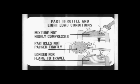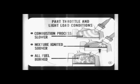Now it's a fact that under part throttle and light load conditions, the air-fuel mixture isn't as highly compressed. The fuel particles aren't packed as tightly together and it takes longer for the flame to travel from one particle to the next. As a result, under part throttle and light load conditions, the combustion process is slower and the mixture must be ignited sooner so that all the fuel will be burned before the end of the power stroke. The vacuum advance takes care of this little detail.